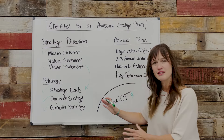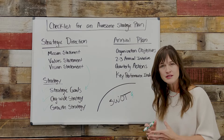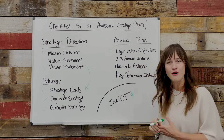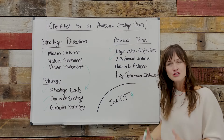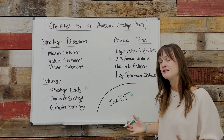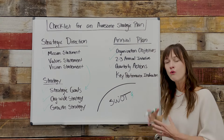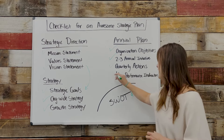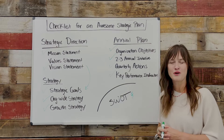Once you have all that articulated, we move to your annual plan, which includes organization-wide objectives — your SMART objectives that should be measurable, time-bound, accountable, all that good stuff. For every org objective, two or three annual initiatives that answer how we're going to accomplish our objectives, ideally assigned to teams. Each initiative should have at least one or two quarterly action items to make sure you can really move them into execution. And of course, no good plan is done unless you're clear about how you're going to measure your success — key performance indicators, or KPIs.